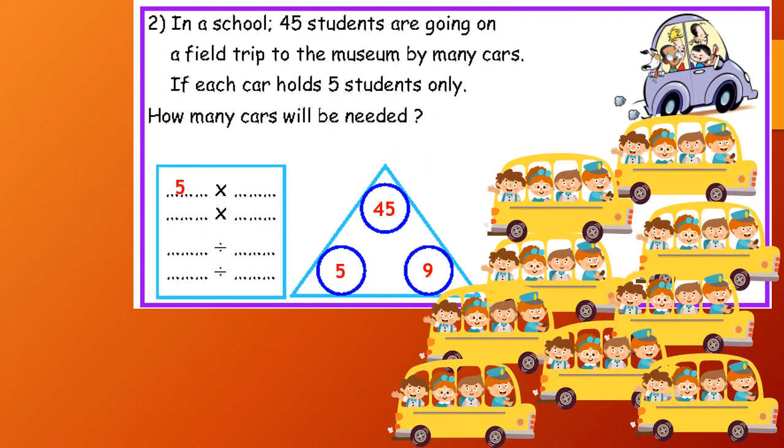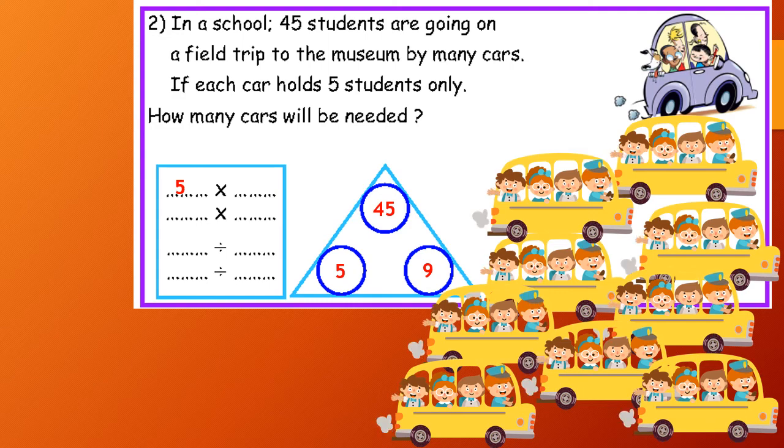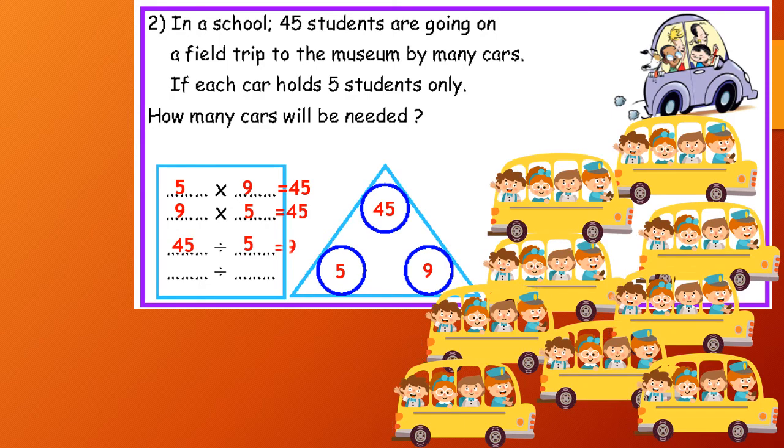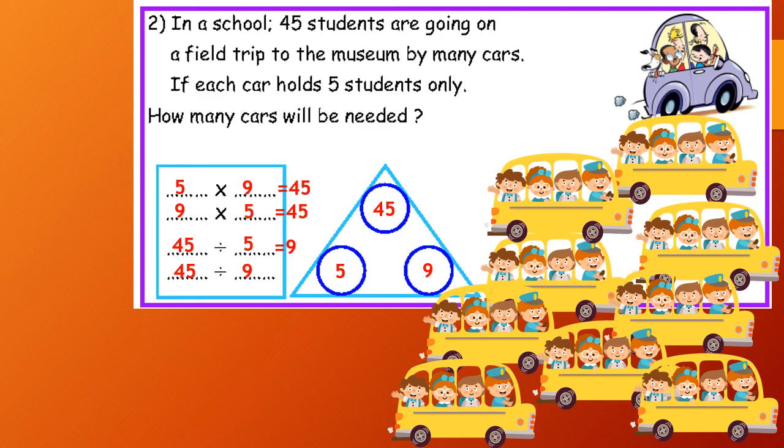So, I have 9 cars. 5 by 9 equals 45, 9 by 5 equals 45, 45 divided by 5 equals 9, and 45 divided by 9 equals 5.